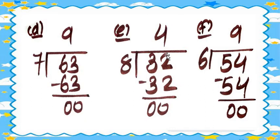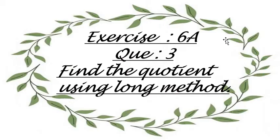We have completed Exercise 6A, question number 2 — solve using the long form of division. You have to write this in your fair book. Now we move on to Exercise 6A, question number 3: find the quotient using the long method.